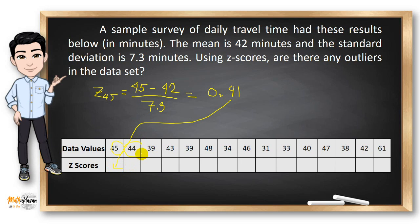For the second one, which is 44, all we need to do is to subtract 44 and 42, divided by 7.3. So, the answer here, in two decimal places, is 0.27.